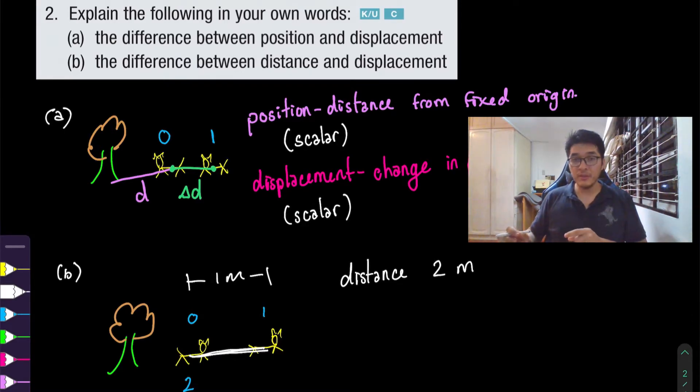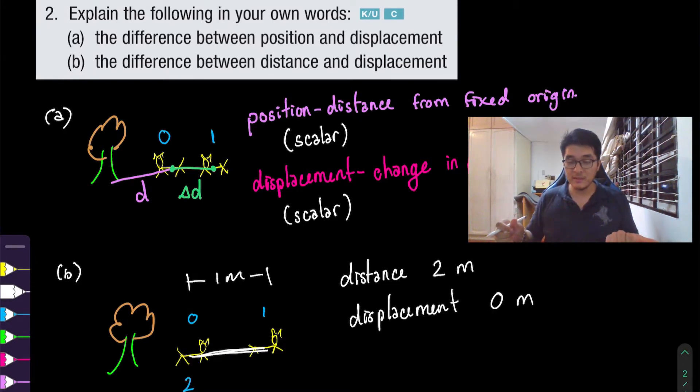But displacement only looks at the change in position. Since you went to the right and you came back to your starting point, your change in position in this case is actually zero because you ended where you started off.